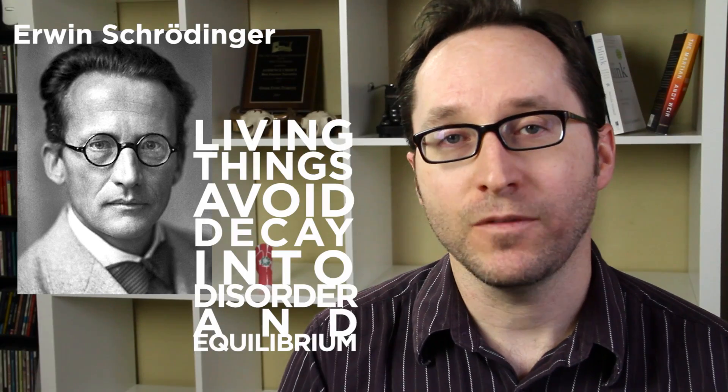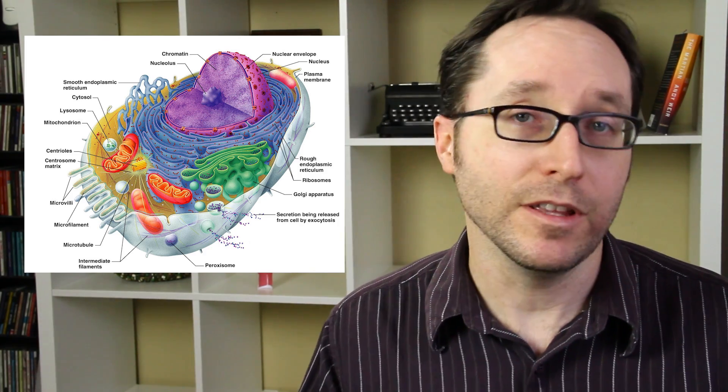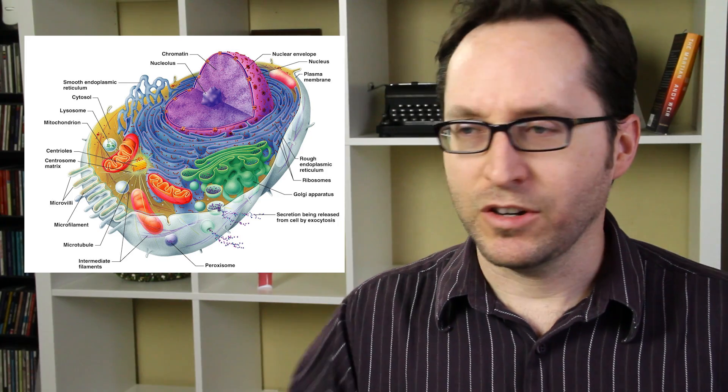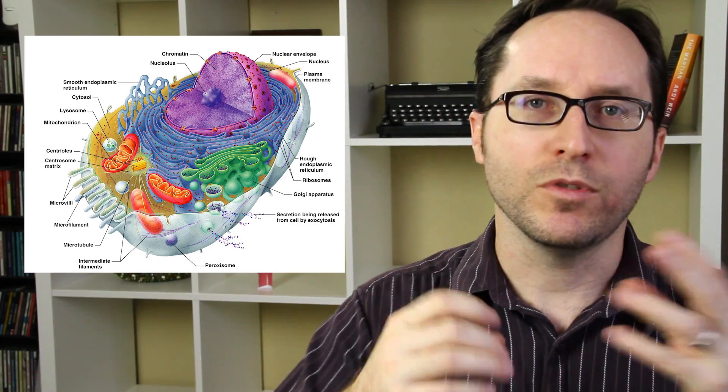The physicist Erwin Schrödinger defined life this way: living things avoid decay into disorder and equilibrium. In the simplest terms, this means that living things are constantly rearranging their constituent parts to maintain their present condition. Take a human cell — it's a living thing, but it's made up of non-living things. It's basically a protein-based machine that turns sugar molecules into ATP and pulls organic compounds out of a soup to create RNA and DNA. None of the parts of the cell are what we'd call alive, but the cell definitely is. The RNA and DNA go on to create whole new people that continue it on for a whole new generation.